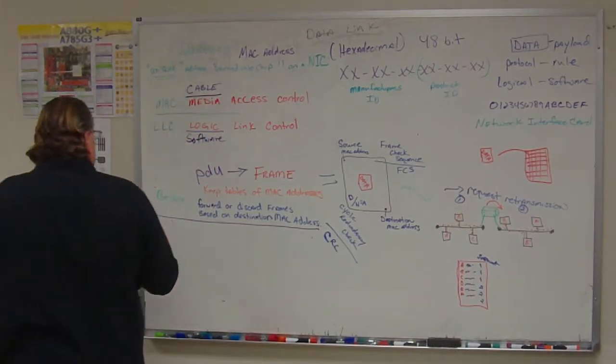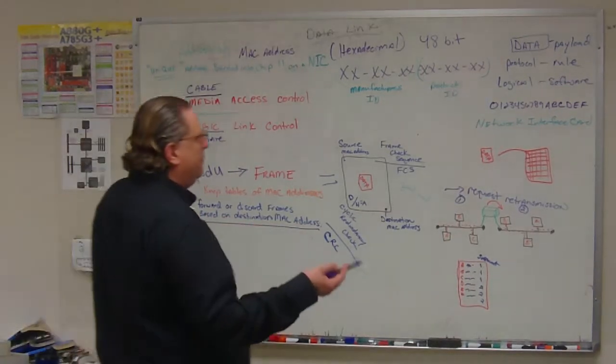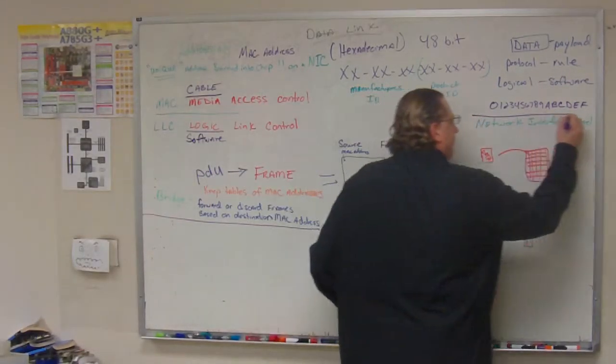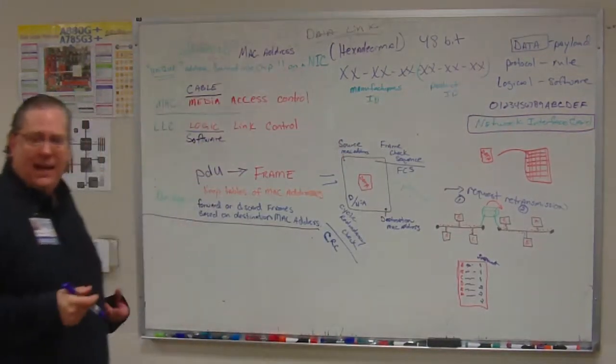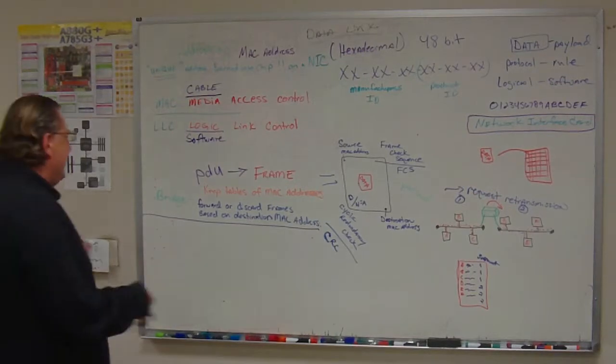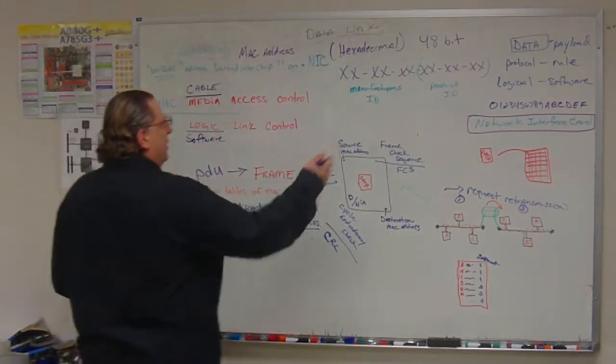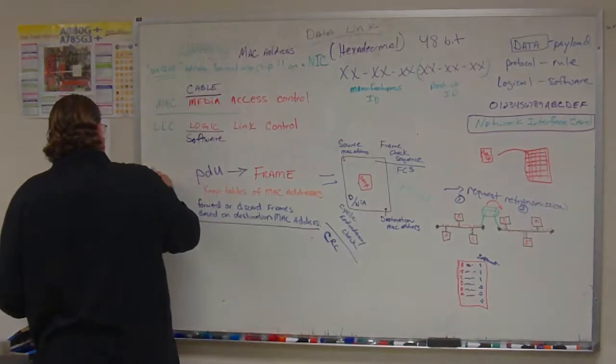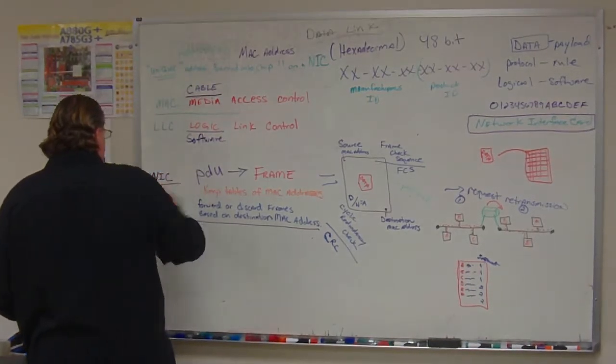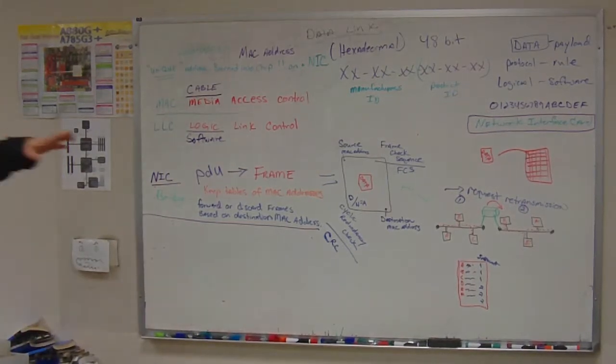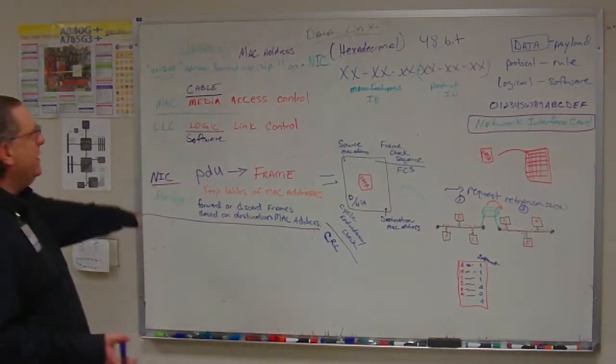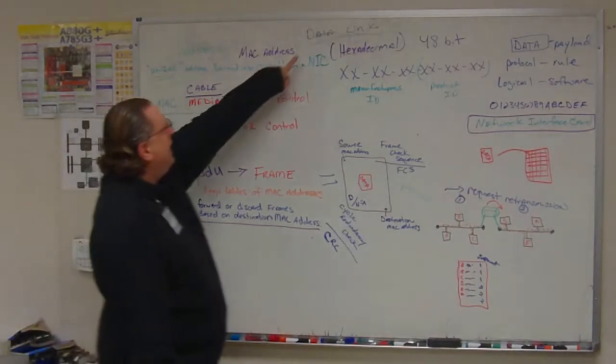The other device that we talked about at this layer is right here. A NIC card. It has a MAC address on it. It accepts and denies traffic based on that MAC address. So we're going to stick that right here. Just NIC right above a bridge. We just need to know what we've already talked about, that it has the MAC address and that it accepts or denies based on that destination MAC address. So a NIC also functions at the data link layer.